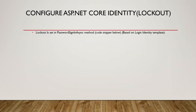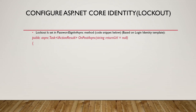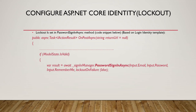Lockout is set in the PasswordSignInAsync method in the code snippet shown. The public async Task IActionResult method — OnPostAsync — is an asynchronous method. When ModelState.IsValid, the SignInManager object calls the PasswordSignInAsync method, and here it sets lockoutOnFailure to false. It's just a snippet of the code, not the full code.